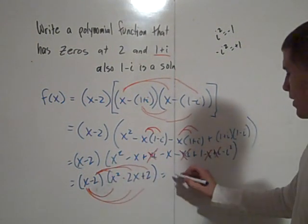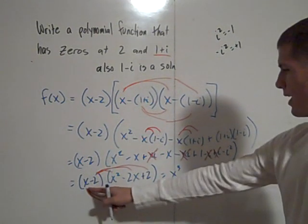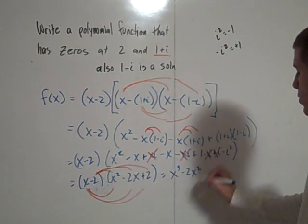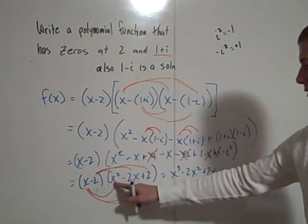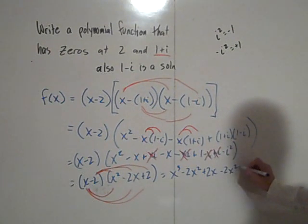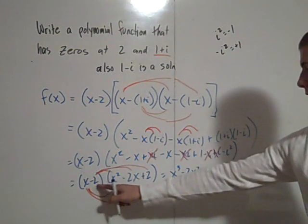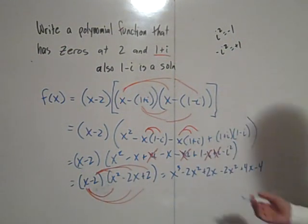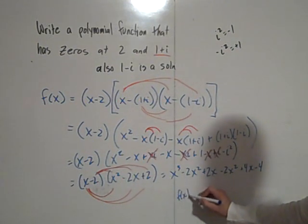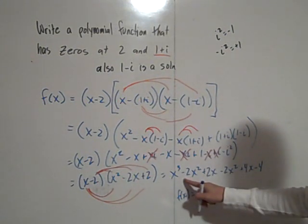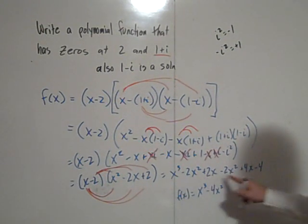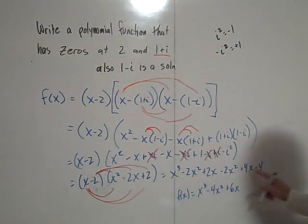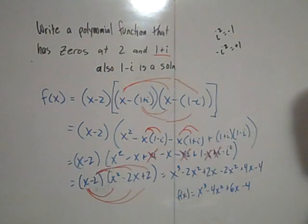Well, x times x squared is x cubed, x times negative 2x, negative 2x squared, x times 2 plus 2x, negative 2 times x squared, negative 2x squared, positive 4x, minus 4. And finally, we have f of x equal to x cubed, minus 2x squared, minus 4x squared, plus 2x, plus 4x, plus 6x, and minus 4. The end.